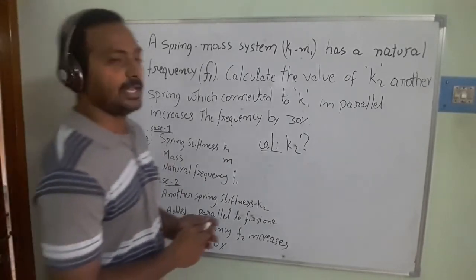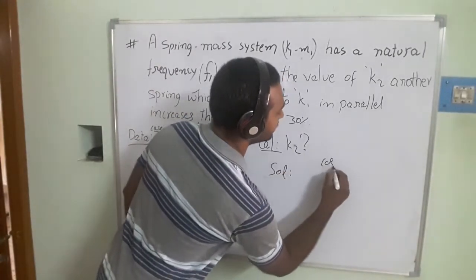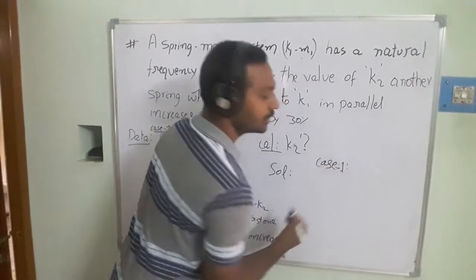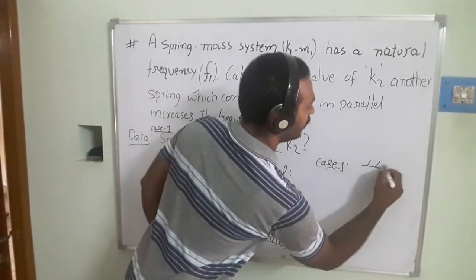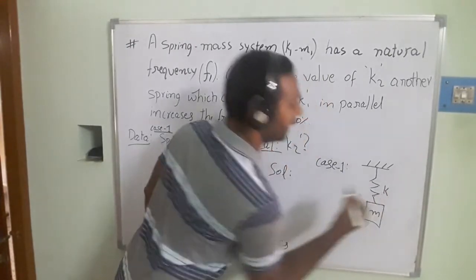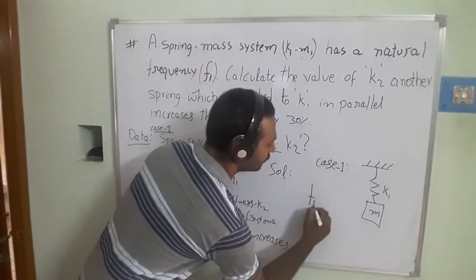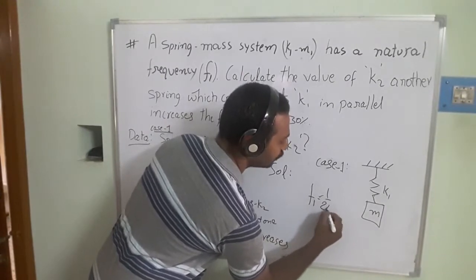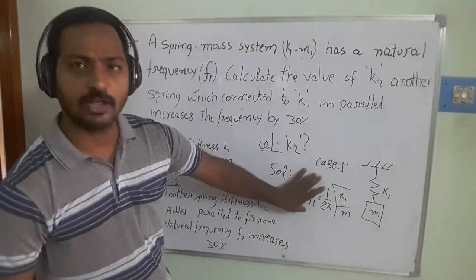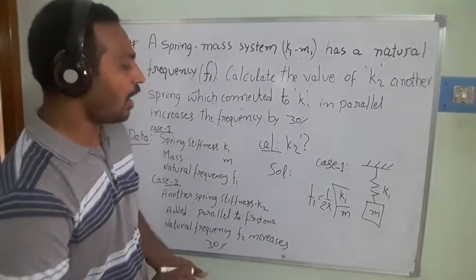For Case 1, I am drawing the free body diagram. Here we have a single spring with stiffness k1 and mass m attached. The natural frequency for this system is f1 = (1/2π) × √(k1/m). Almost all the values are available symbolically, but we need to calculate k2.